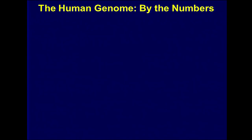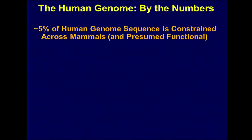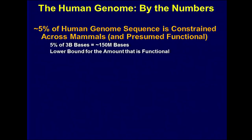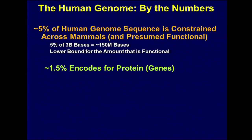That has given us tremendous insights. By the numbers: we now know that about 5% of the human genome sequence is constrained across all mammals. If it's that heavily conserved, it's almost certainly going to serve some functional role. That's about 150 million bases found in the same position in virtually all mammals. It's probably a lower bound for the amount that's actually functional. But only about a third of that 5% directly encodes for proteins — for protein-coding genes. That third corresponds to about 20,000 genes.